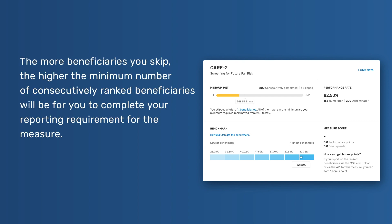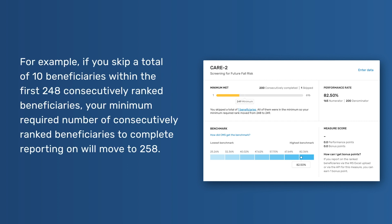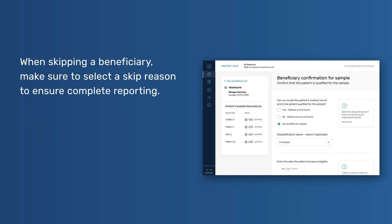The more beneficiaries you skip, the higher the minimum number of consecutively ranked beneficiaries will be for you to complete your reporting requirement for the measure. For example, if you skip a total of 10 beneficiaries within the first 248 consecutively ranked beneficiaries, your minimum required number will move to 258. When skipping a beneficiary, make sure to select a skip reason to ensure complete reporting.